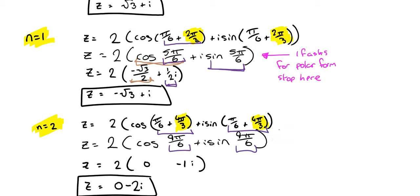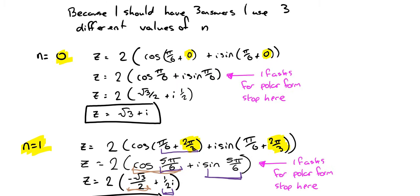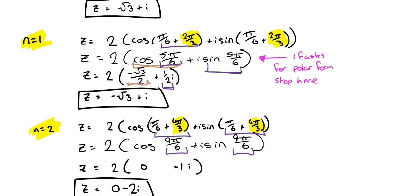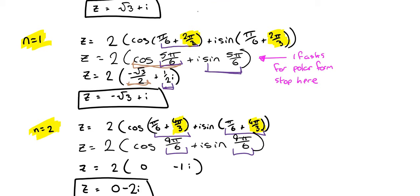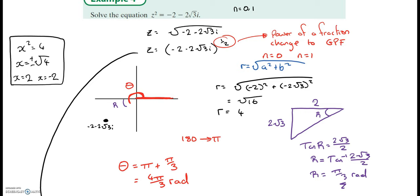Now let's look at another question in general polar form. Solve the equation z² = −2 − 2√3i. We know that if x² = 4, we take the square root of both sides using ± √4, giving two answers. So when the power is 2 we expect two answers.